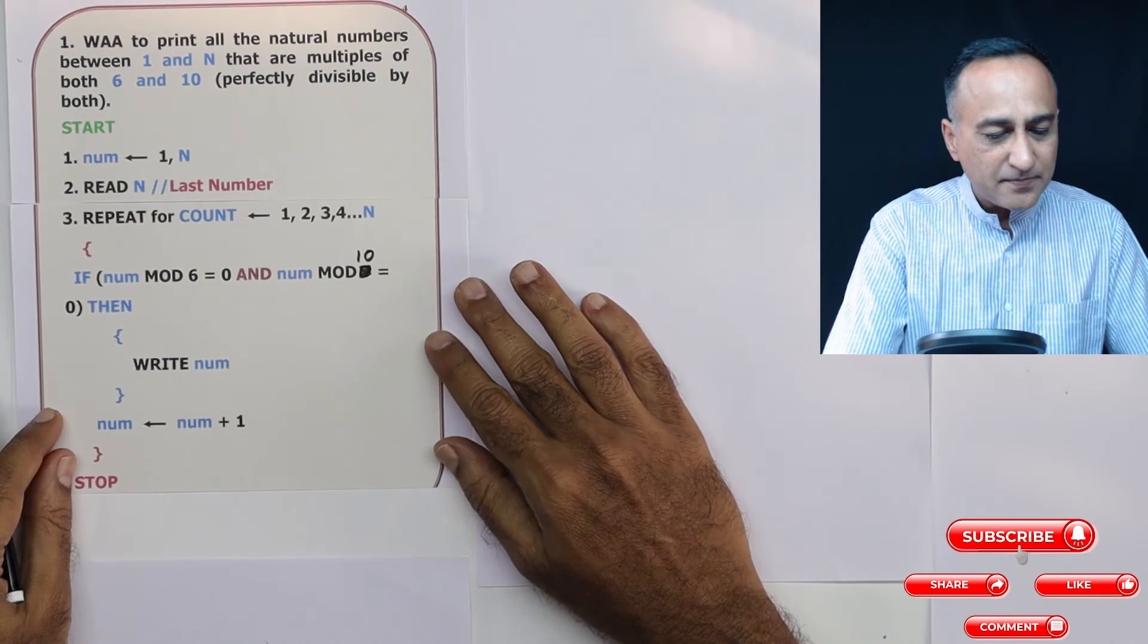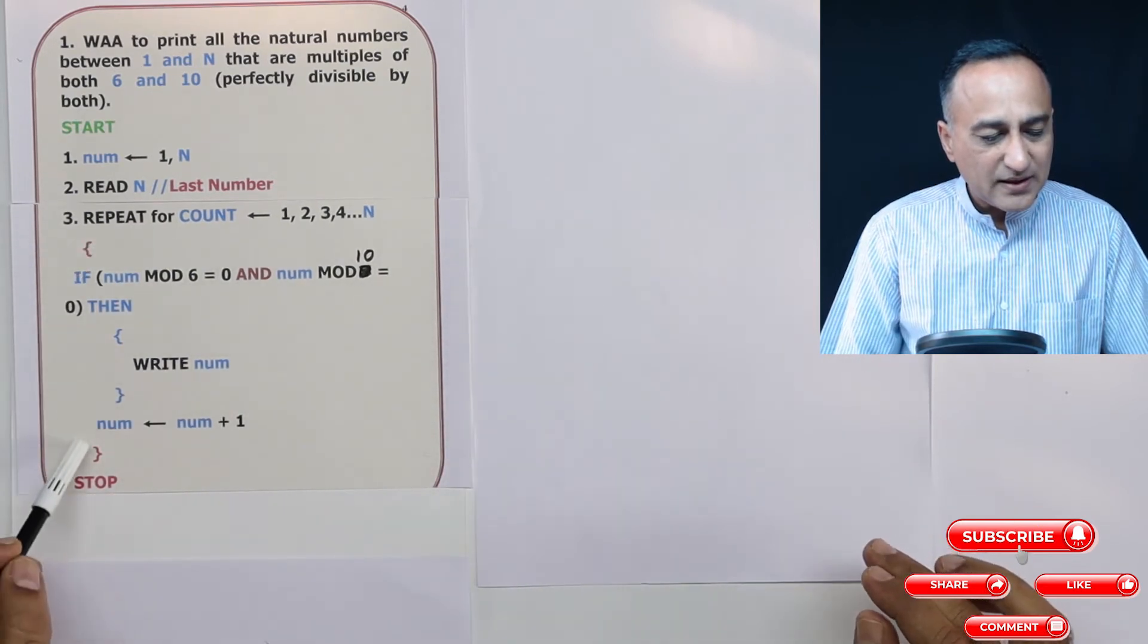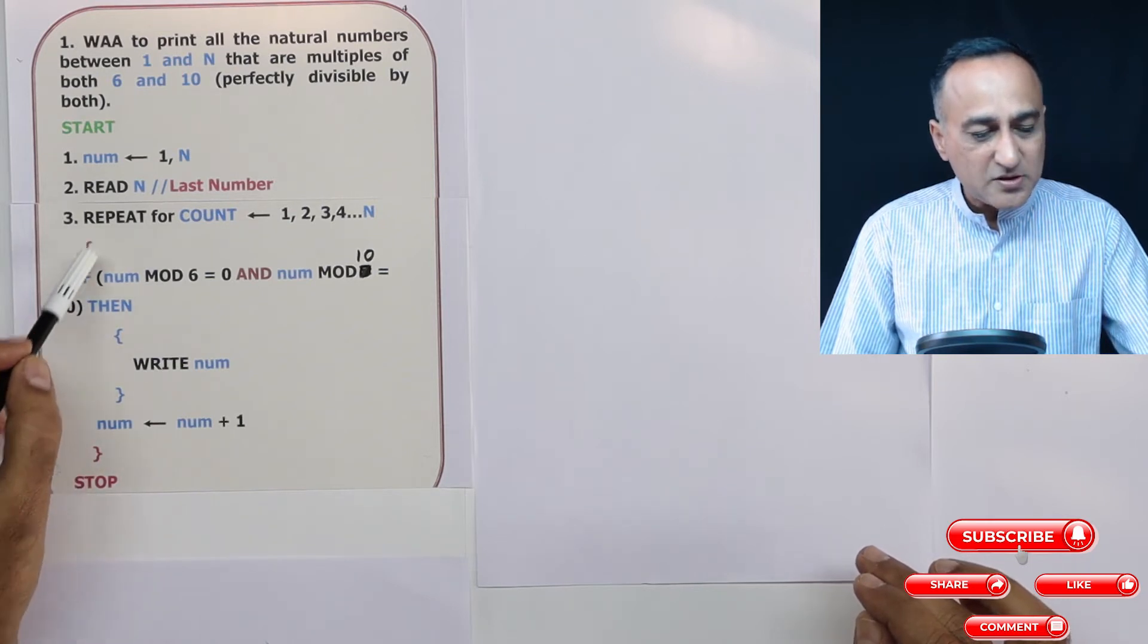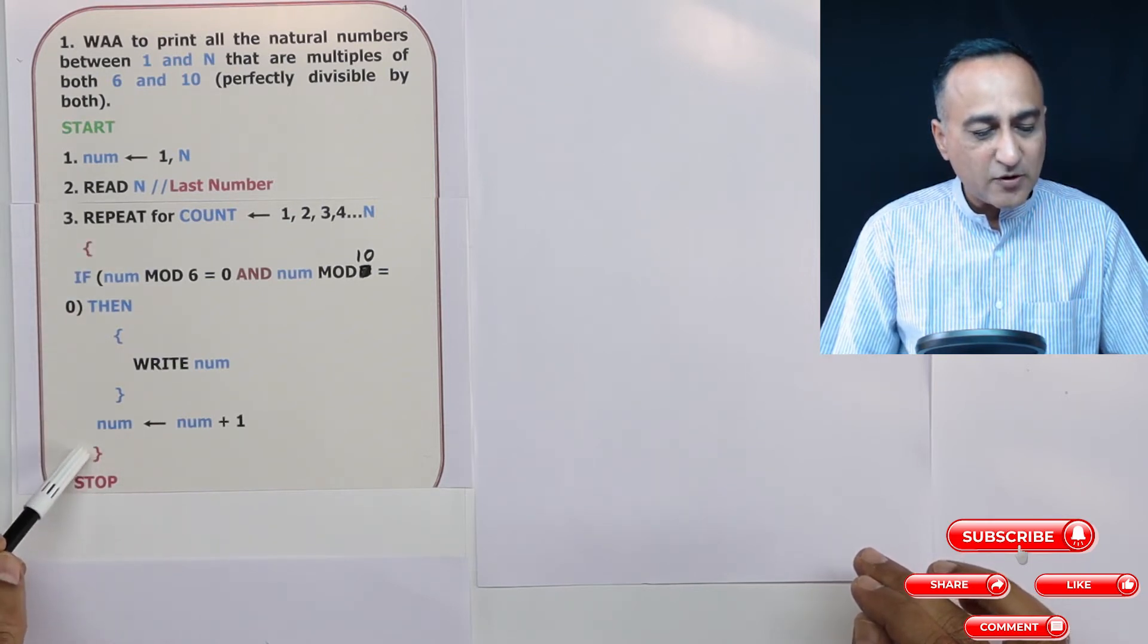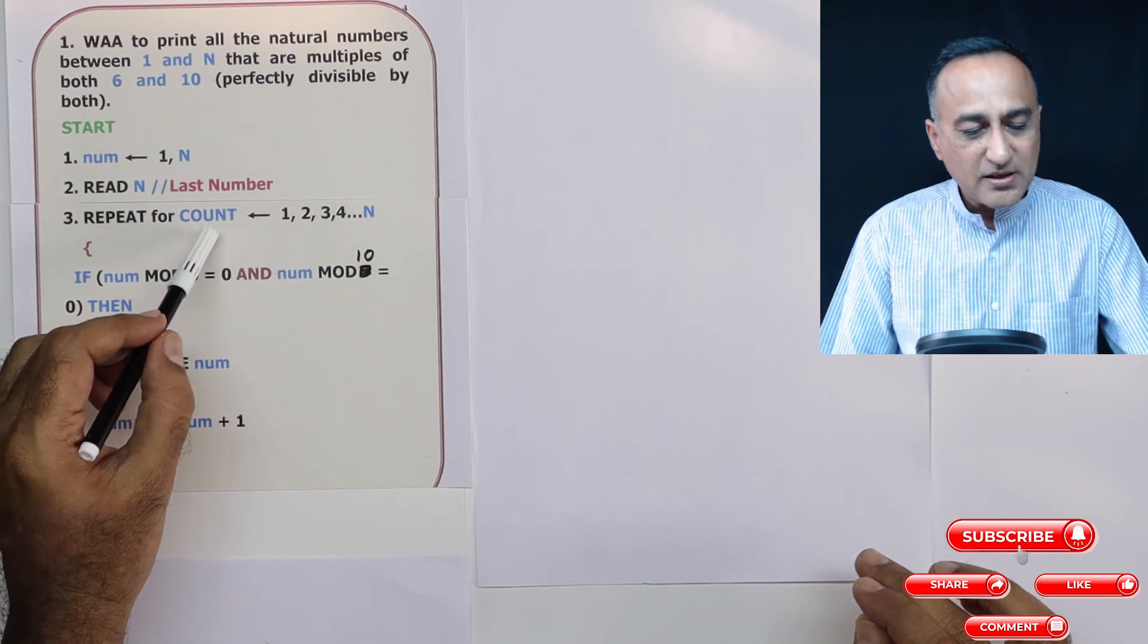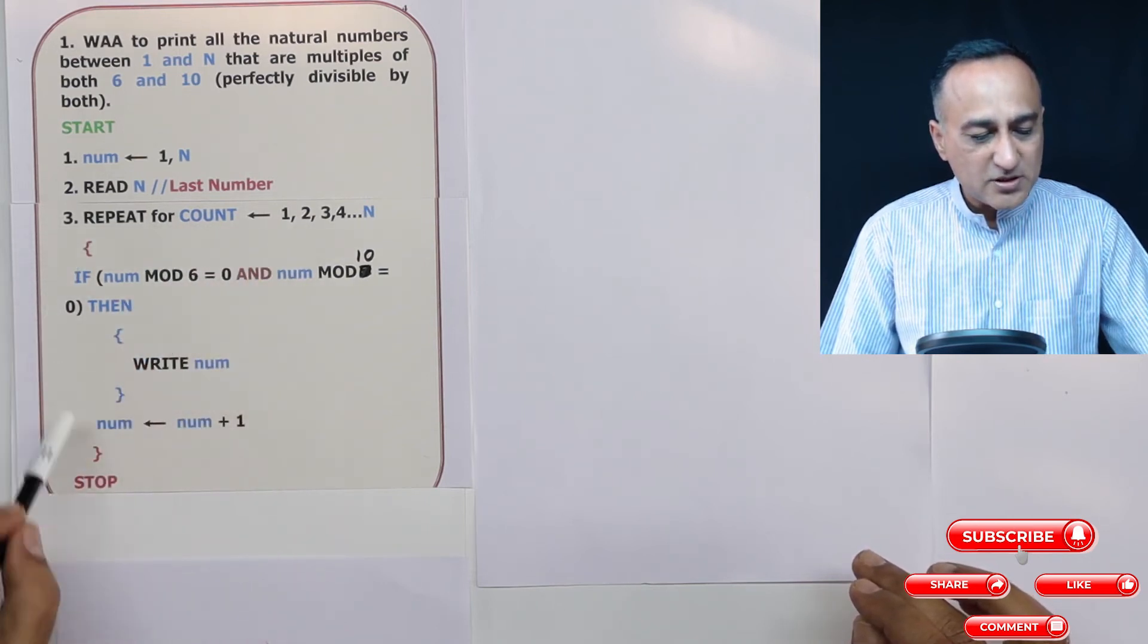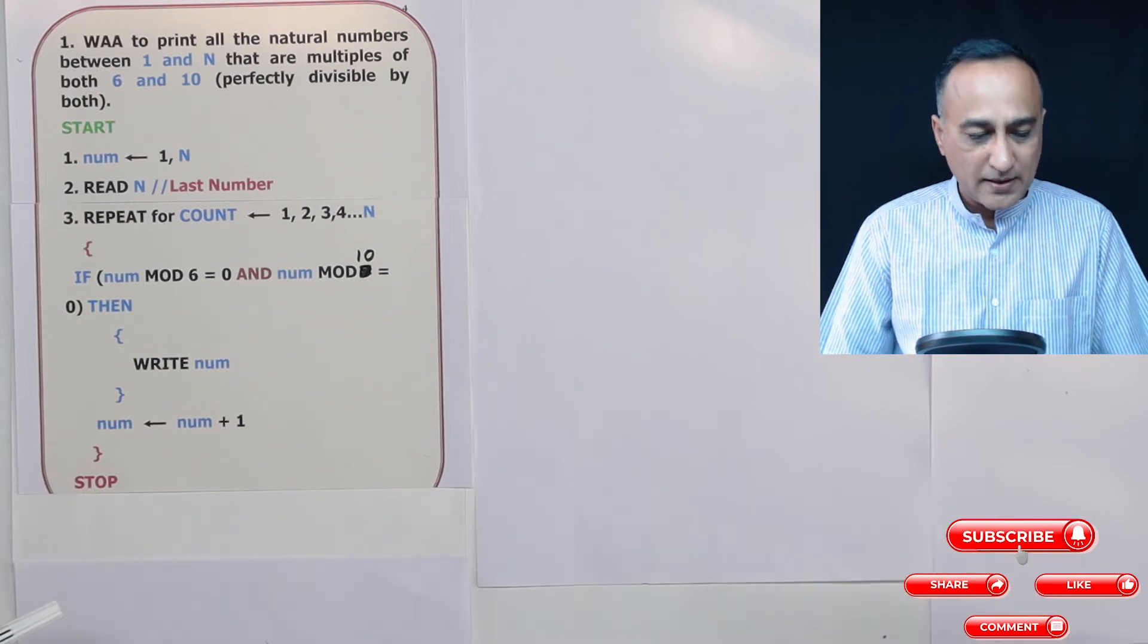Now the repeat is between the red parentheses or the red flower brackets. So repeat is going to execute between the red flower brackets once for each count. When count is one, one time. If count is two, it will execute this repeat for two times.